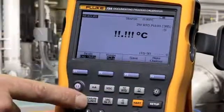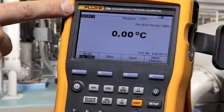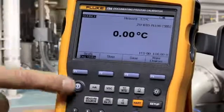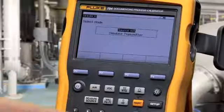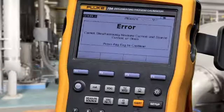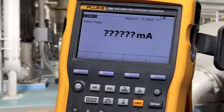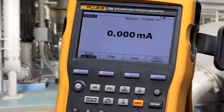To source, change the calibrator from the measure screen to the source screen. To source milliamps, select the milliamp button and make your connection. Type in your value and press enter.